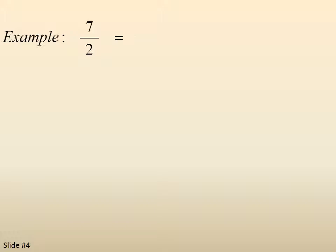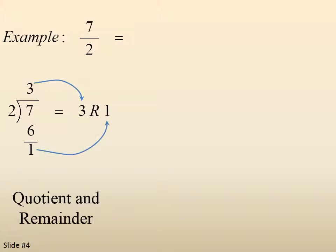Example, 7 over 2. We can write it as 3 remainder 1. It's called quotient and remainder, because 2 goes into 7 3 times with a remainder of 1.